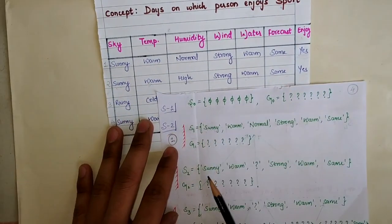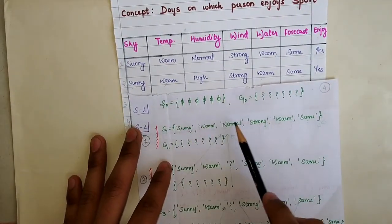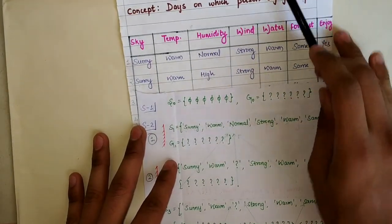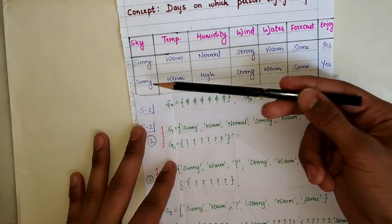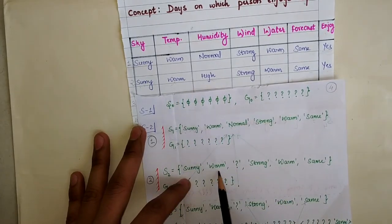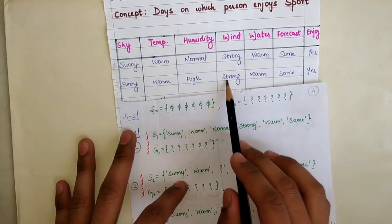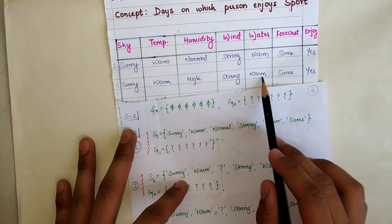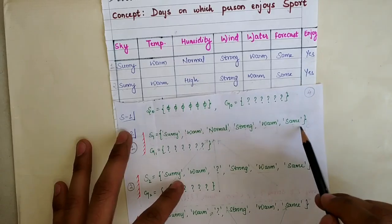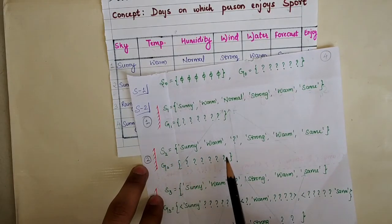Our second example is also positive, so we make changes to the specific hypothesis. We compare each attribute: if the attribute value differs from the hypothesis value, we place a question mark. Sunny matches sunny — write sunny. Warm matches warm — write warm. High vs normal — different, so place a question mark. Strong matches strong — write strong. Warm matches warm — write warm. Same matches same — write same. The general hypothesis remains all question marks.